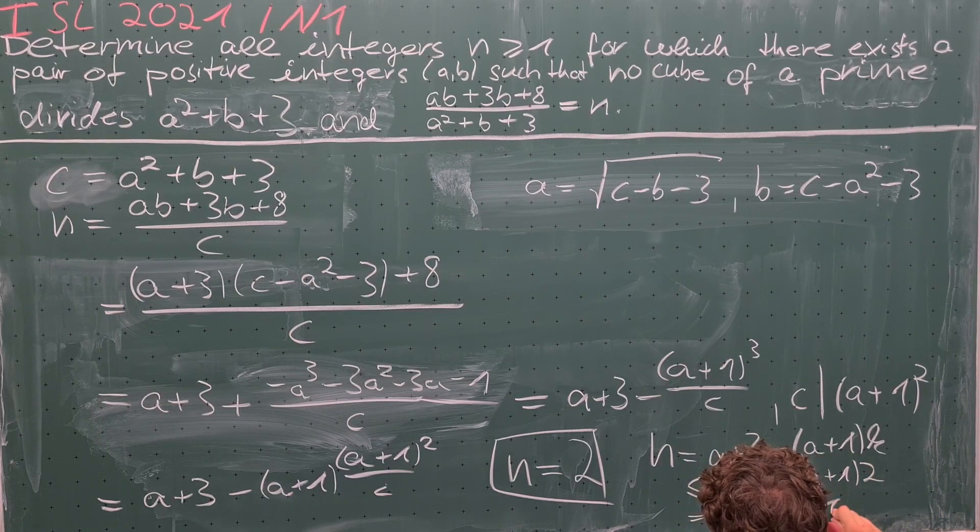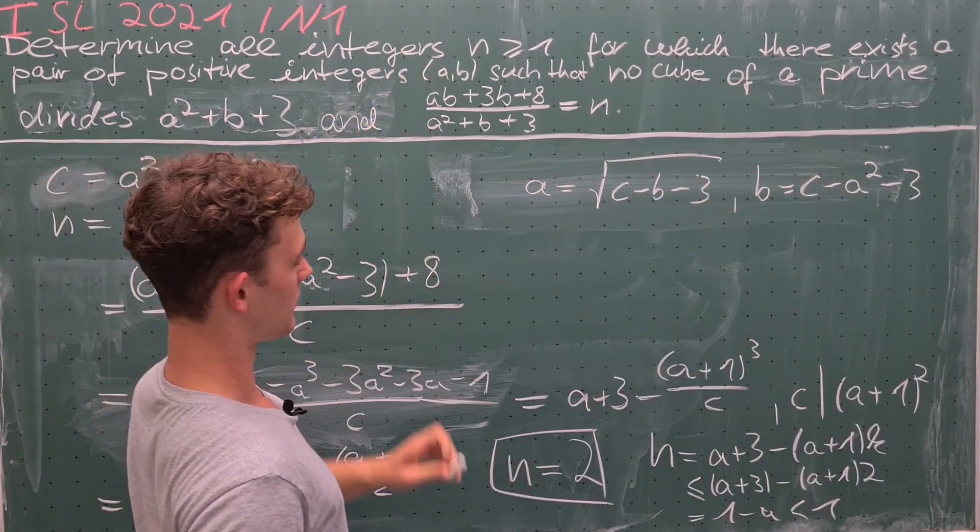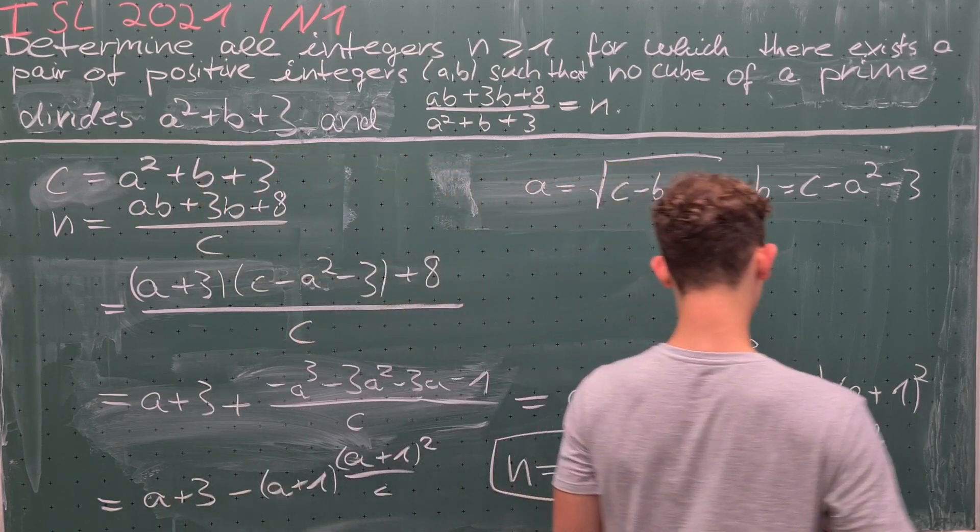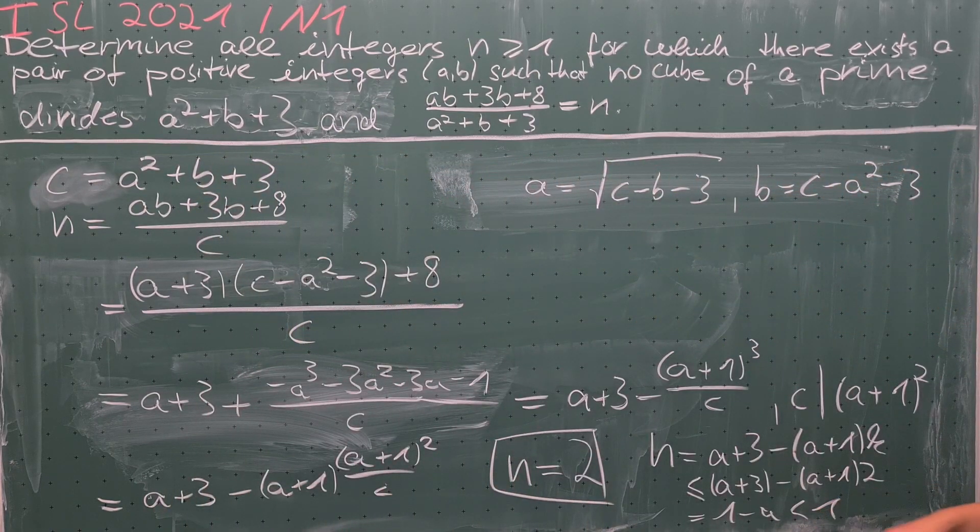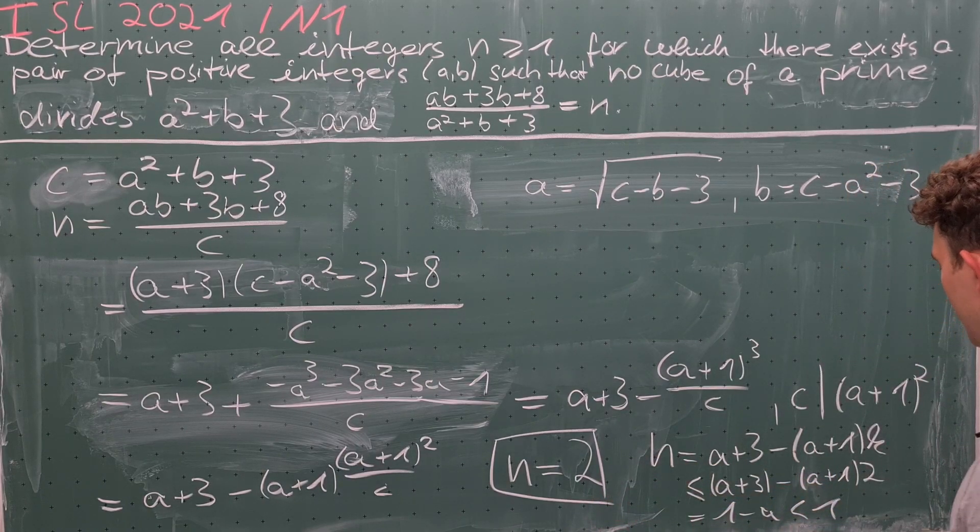But the problem states that n must be greater than or equal to 1, which contradicts n less than 1. And therefore, n = 2 is the only solution to the problem. And we are done.